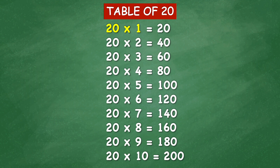Table of 20: 20 times 1 equals 20, 20 times 2 equals 40, 20 times 3 equals 60, 20 times 4 equals 80, 20 times 5 equals 100, 20 times 6 equals 120, 20 times 7 equals 140, 20 times 8 equals 160, 20 times 9 equals 180, 20 times 10 equals 200.